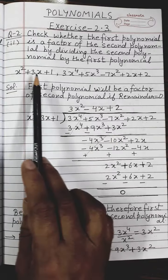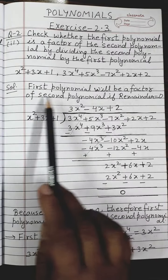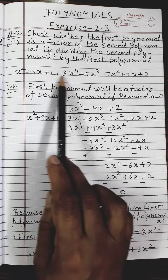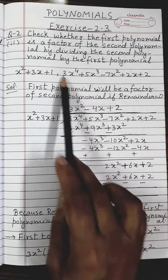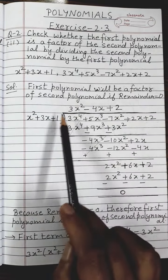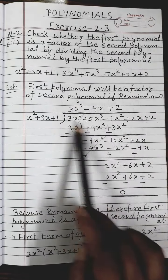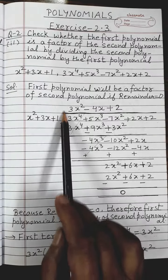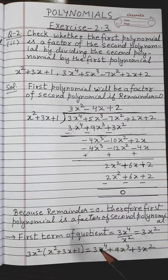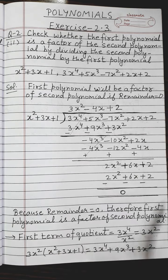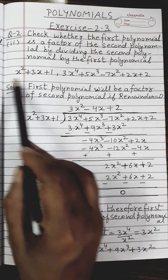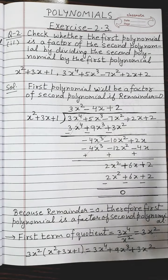Now the solution is like this. The first polynomial will be a factor of the second polynomial if the remainder equals 0. The second polynomial is your dividend and the first polynomial is your divisor. I write the dividend inside the division sign and the divisor on the left side, and will carry out the division process. If the remainder is 0 after the division is completed, it means the first polynomial is a factor of the second polynomial.